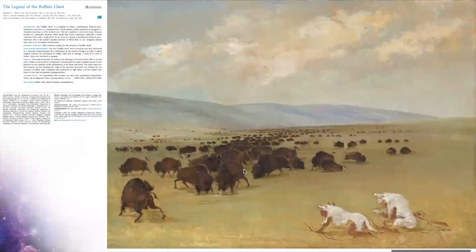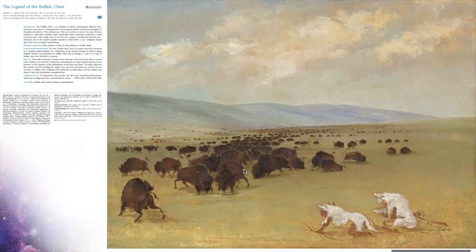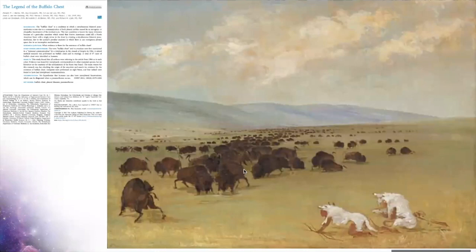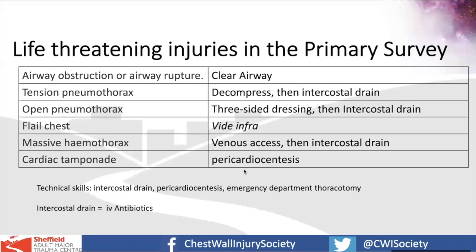It's useful to think about why we might get problems in the chest. One major issue in the primary survey is pneumothorax. To add a bit of trivia — the native population in North America recognised that it only took one arrow to cause a fatal pneumothorax in buffalo, because buffalo only have one pleural cavity containing two lungs. This is actually the case in some humans also, as a paper published just this year explored in the legend of the buffalo chest.